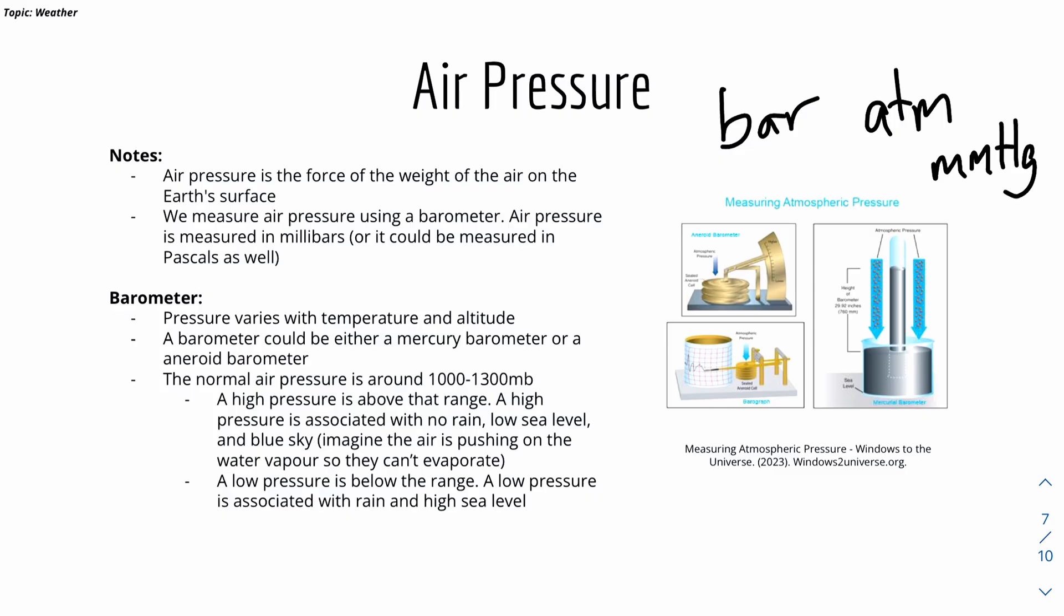Here's a diagram of a barometer measuring atmospheric pressure with some notes on barometer to the left. Here's a quick note that pressure varies with temperatures and altitude. The barometer can either be a mercury barometer or an aneroid barometer.